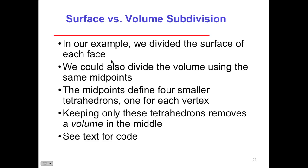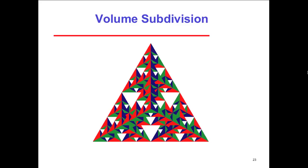So we have surface versus volume subdivision as another example. In our example, we divided the surface into faces. We could also divide the volume using the same midpoints. So the midpoints define the four smaller tetrahedrons for each one of the vertices, or vertexes, keeping only the ones that we're removing of volume. So see the text for code. This is actually in the red book. There's a text. There's the code for this, which is what this lecture is based on. So the red book is going to have the code that's going to be for this. And then this situation looks like this, the subdivision.